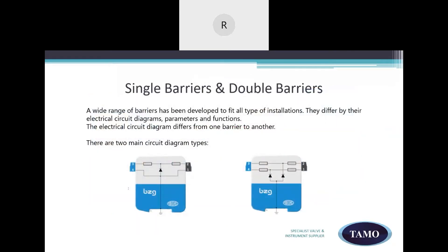Single barriers and double barriers. A wide range of barriers has been developed to fit all types of installations. They differ by their electrical circuit diagrams, parameters and functions. The electrical circuit diagram differs from one barrier to another and there are two main types of circuit diagram: single barriers and double barriers.